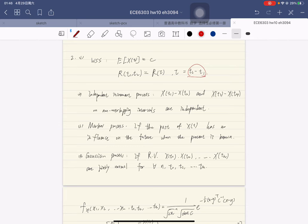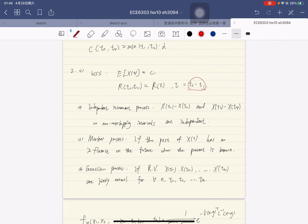The second is independent increment process, which means X(T1) minus X(T2) and X(T3) minus X(T4), where T1 T2 and T3 T4 are non-overlapping intervals, are independent. So far, we see that Poisson process, random walk, and Wiener process are independent increment processes. It seems independent increment property is somehow related to Markov process.